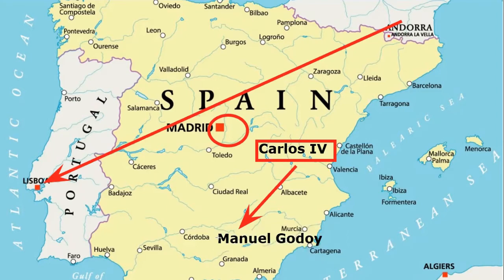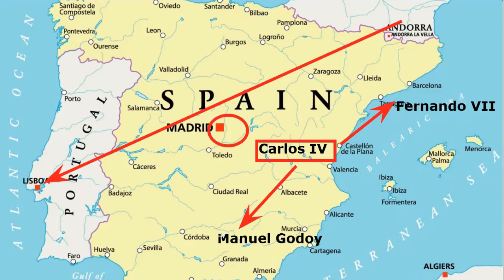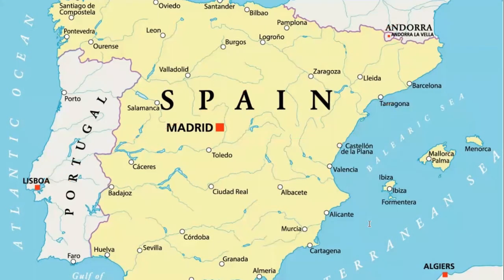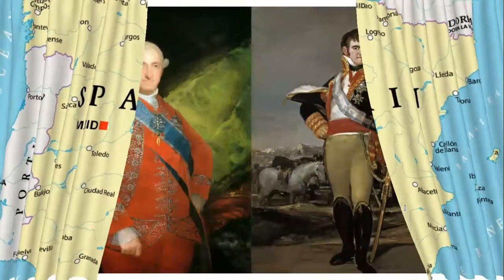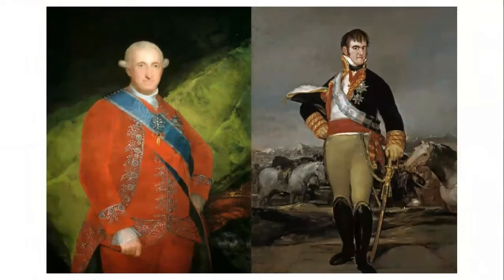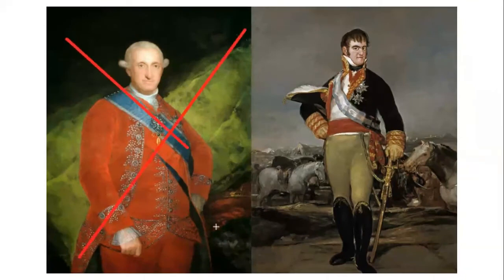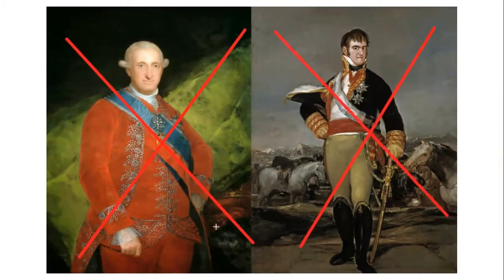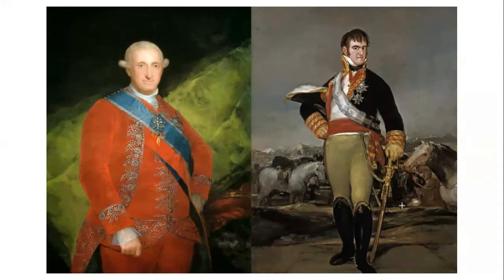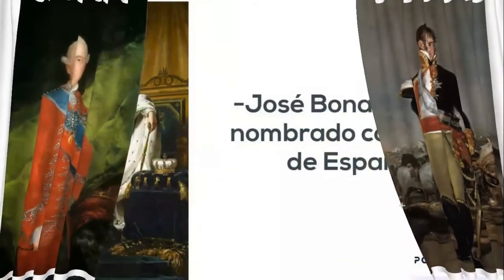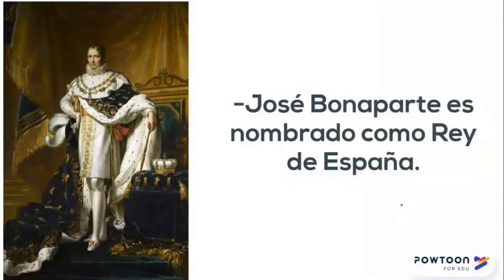Durante el tránsito, las tropas se dieron cuenta de la inestabilidad política en España. Carlos IV no gobernaba del todo, pues quien realmente mandaba era el amante de su esposa, llamado Manuel Godoy. Había una disputa entre Carlos IV y su hijo Fernando VII por el trono de España. Napoleón Bonaparte aprovechó esta disputa familiar para hacer abdicar a Carlos IV, posteriormente a Fernando VII, y estableció como rey de España a su hermano José Bonaparte.